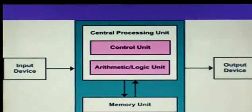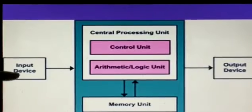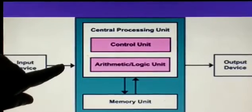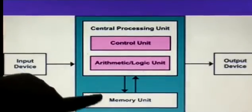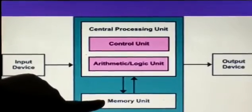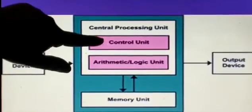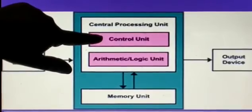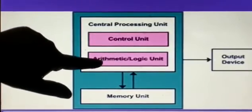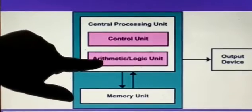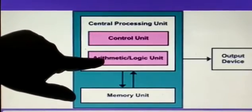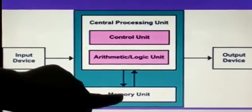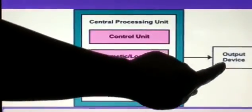Now let us study through the diagram. Suppose we give input through input device like keyboard. We give input 2 plus 3 here. Our problem first goes in the memory unit. Memory unit sends it to the control unit. And control unit decides that it is the problem for ALU. So it sends to the ALU. ALU processes our problem and sends it to the control unit. Control unit further sends it to the memory unit. And memory unit sends it to the output device like monitor.